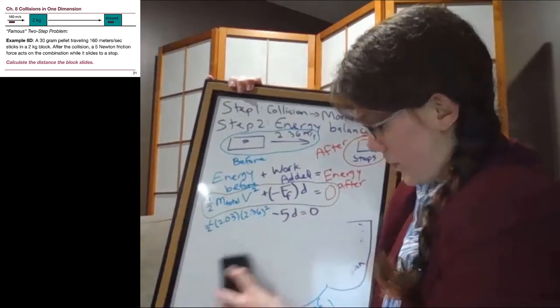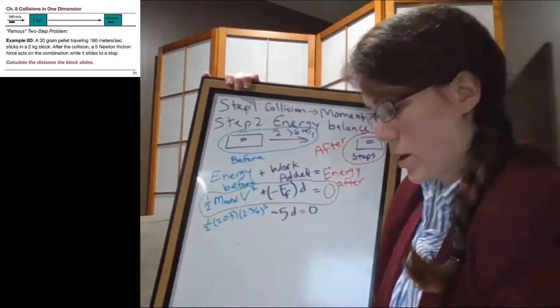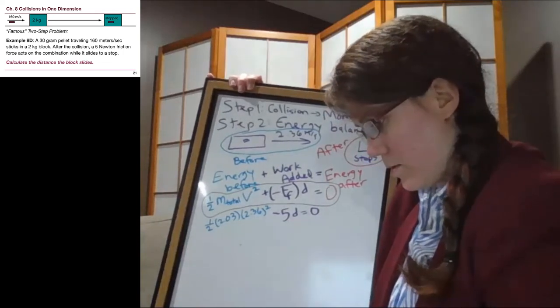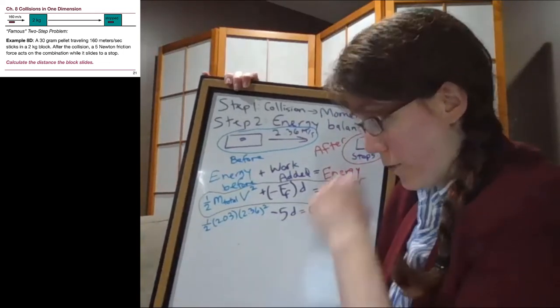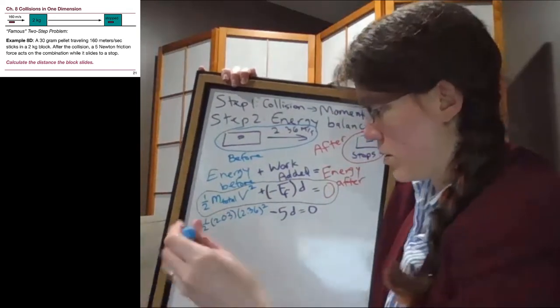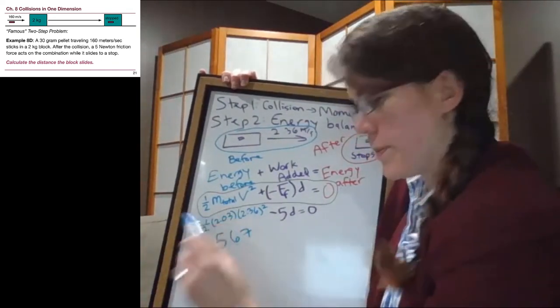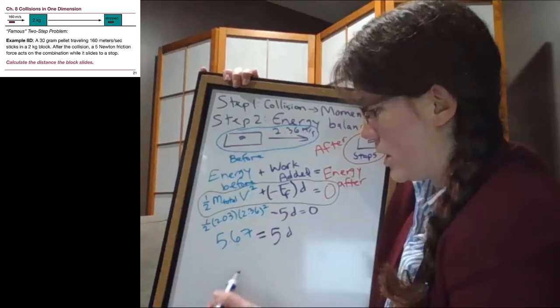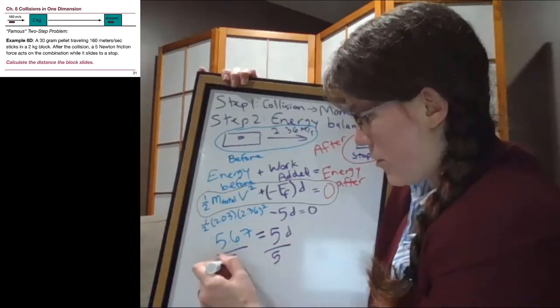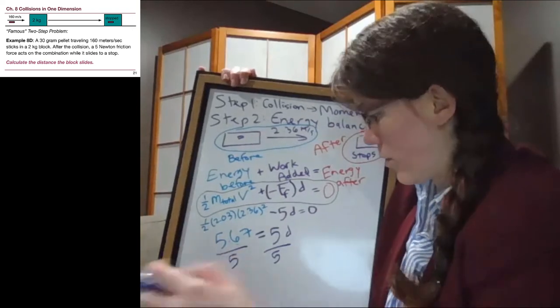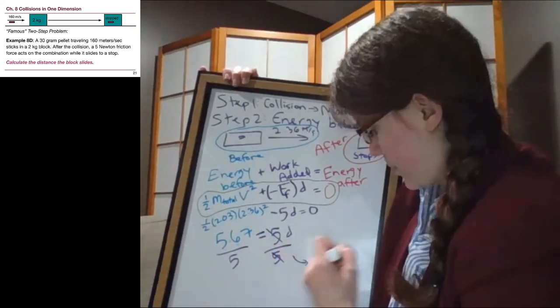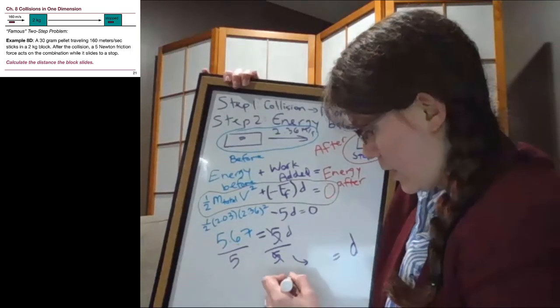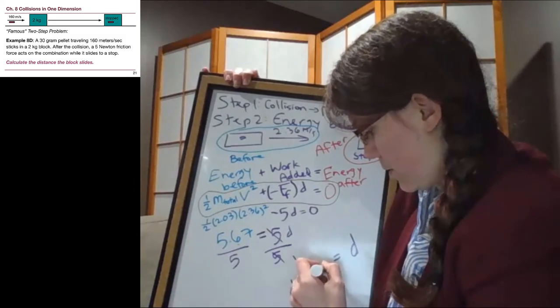So to solve this, we can get the kinetic energy with our calculators. We'll get 5.67. And if we added five d to both sides, now we have a positive five d over here, so we can divide both sides by five, and we will get that our final distance that it slid is a little over one meter - it's 1.13 meters.